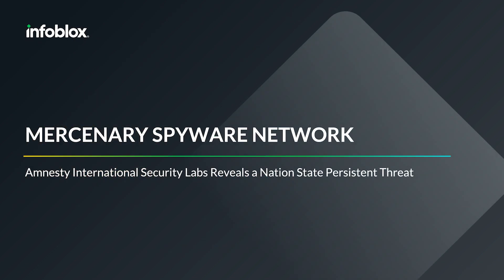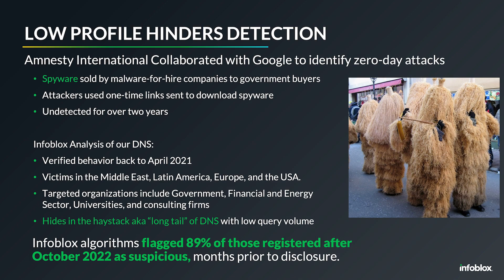The third example is a mercenary spy network. Amnesty International released a report about nation-state persistent threats in which a commercial entity is selling the ability to exploit phones using zero-day attacks against Android devices. These include spyware, and this type of attack is most commonly associated with the system Pegasus, which was discovered a few years ago.